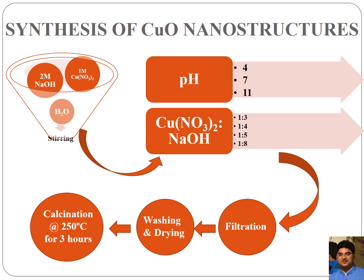Similarly the ratio of copper nitrate to sodium hydroxide was also varied. The synthesis was undertaken using four different ratios: 1:3, 1:4, 1:5 and 1:8. After the stirring process was complete, precipitates were seen in the mixture. These precipitates were filtered, washed and dried. The dried precipitates were then calcined at 250 degrees Celsius for three hours, and finally a black colored solid copper oxide was obtained.